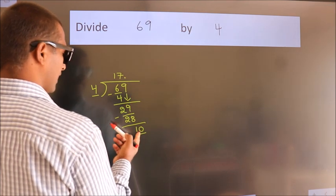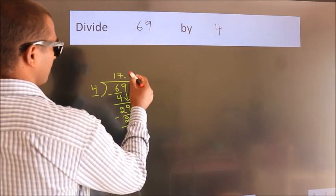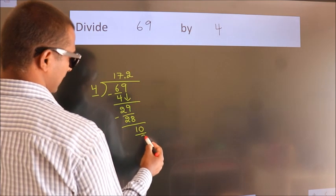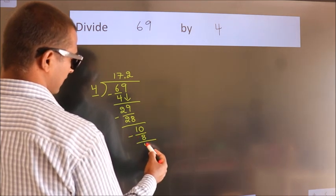So, 10. A number close to 10 in 4 table is 4 twos 8. Now, we subtract. We get 2.